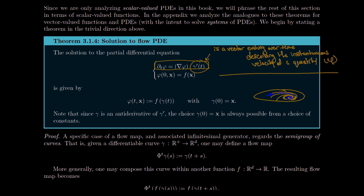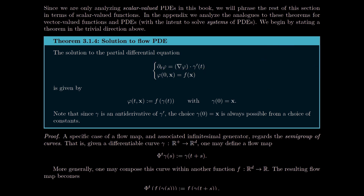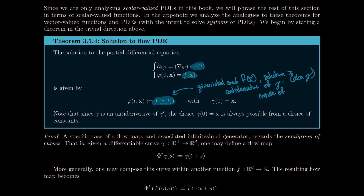Some people call this an advection PDE, though that's slightly different. You can solve this PDE using flows. The solution is not that bad: given initial condition f(x), the solution is just the initial condition evaluated at the antiderivative of gamma prime — i.e., gamma — inside f. You want to make sure gamma at zero equals x, which is always achievable by choosing the integration constant appropriately.